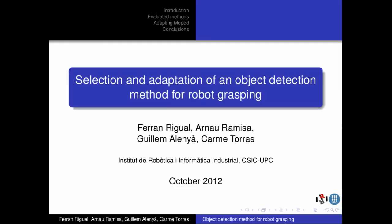Hello, I am Ferran Rigual and I will present the work that we have done in selection and adaptation of an object detection method for robot grasping. This work was done at the Institut de Robotica e Informática Industrial, in collaboration with Arnau Ramisa, Guillem Alanyà and Karma Torres.